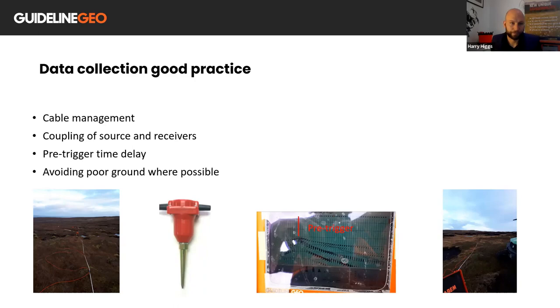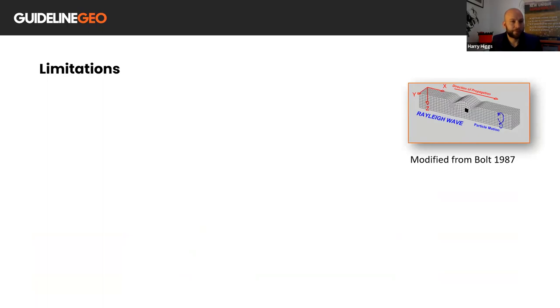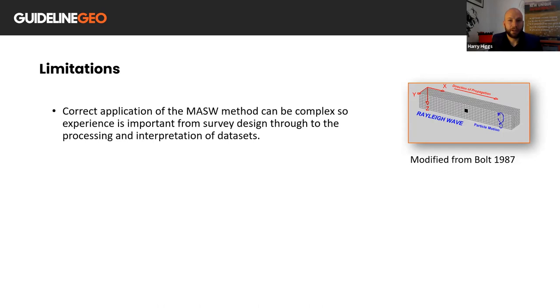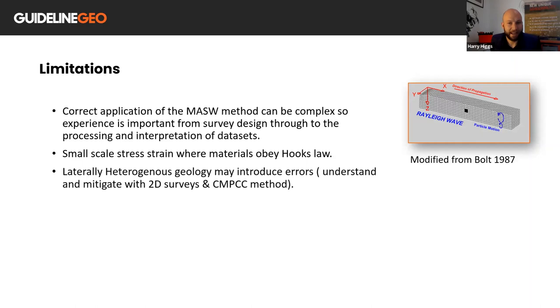So some of the limitations that we have with MASW. The correct application of the MASW methods can be complex. So experience is important from survey design through to the processing and interpretation of the data sets. A small scale stress and strain where materials obey Hooke's law is assumed for calculations of the elastic moduli. In laterally heterogeneous geology, errors may be introduced as velocity is averaged beneath the array and over the receivers used to calculate a particular frequency. So CMPCC methods can be used to increase the lateral resolution by using different receiver pairs grouped into common midpoints throughout an array.